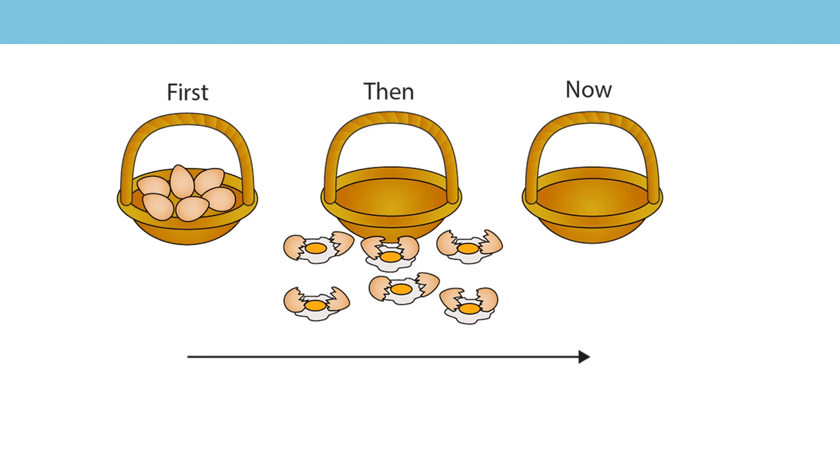Let's have a look at this story. I started with six eggs in my basket. What happened next? Six eggs were broken. They're no longer in the basket and I'm left with zero eggs. Can you have a go at saying that number sentence? Six subtract six equals zero. What does the zero represent?